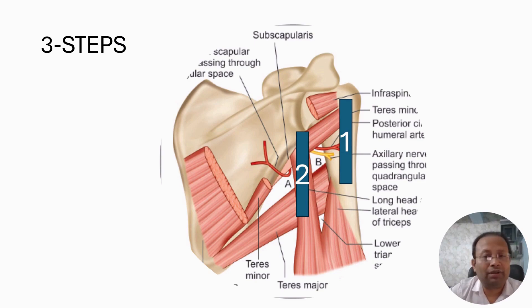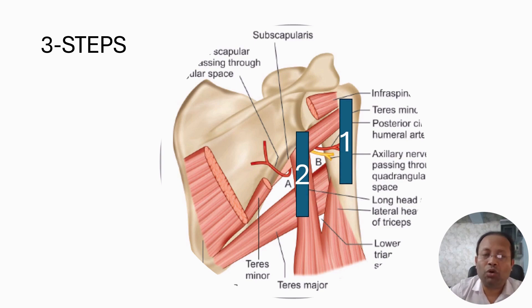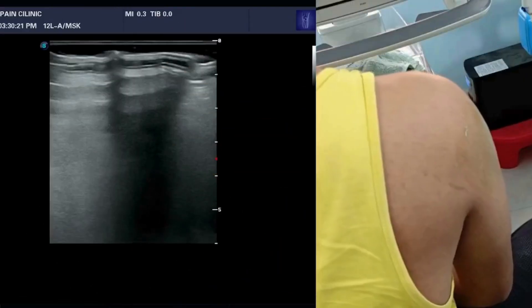Step 3 is just an oblique view from Step 2, where the probe is obliquely directed towards the quadrangular space to locate the neurovascular bundle.